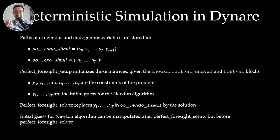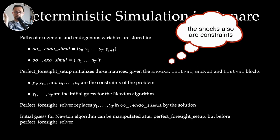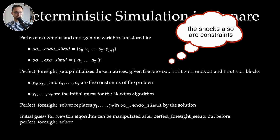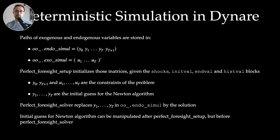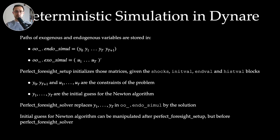The perfect_foresight_setup command initializes those matrices given the shocks, initval, endval, and histval blocks. The initial period and terminal period are the constraints of the problem, and in between you have the initial guess for the Newton algorithm. When you run perfect_foresight_solver, this replaces those initial values with the actual solution. Running perfect_foresight_setup prior to perfect_foresight_solver is very handy because you can double-check whether the problem is exactly what you want, or manipulate it to achieve what you need. Let me give you several examples in Dynare.